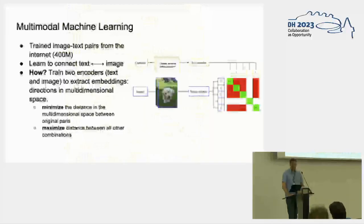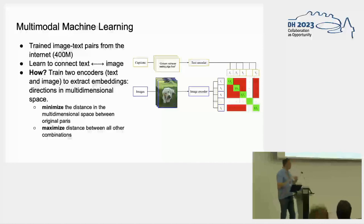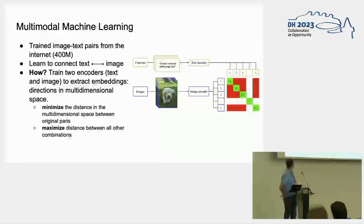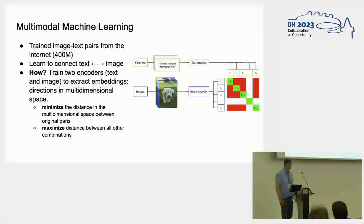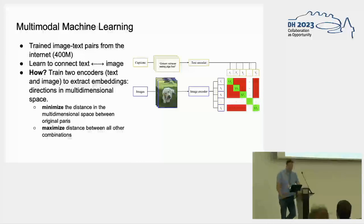We then apply CLIP to these images. CLIP is trained on modern image-text pairs sourced from the internet — around 400 million for CLIP itself. During training it learns to connect text to images by training two encoders, a text encoder and an image encoder, to extract embeddings — basically directions in a multidimensional space. It learns to minimize the distance between the original pairs in that multidimensional space and maximize the distance between all other combinations.